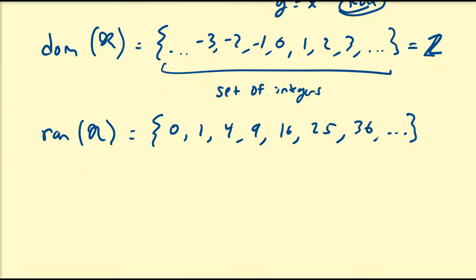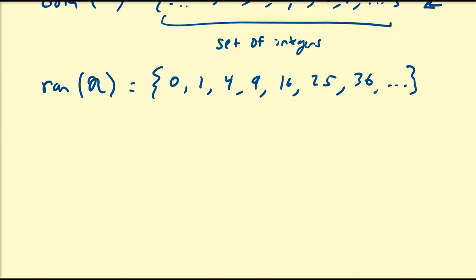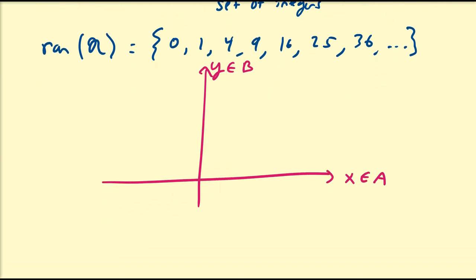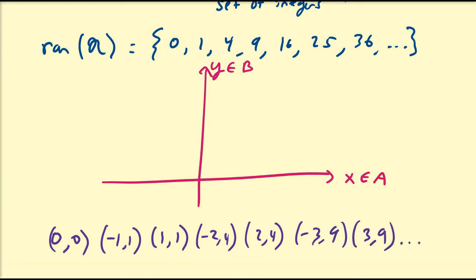Alright, so let us graph this rule that we have. So let's again graph our picture. Let this be X and let this be Y. Again, X is going to belong to A, and Y is going to belong to B. So we already know some points on this curve, or this plot. 0 is going to go to 0, negative 1 is going to go to 1, 1 is going to go to 1, negative 2 is going to go to 4, 2 is going to go to 4, negative 3 is going to go to 9, and 3 is going to go to 9, and so forth.